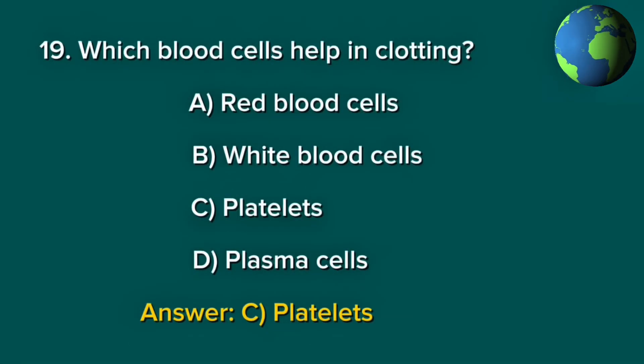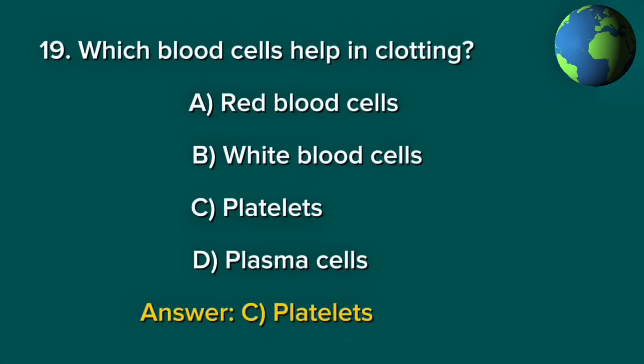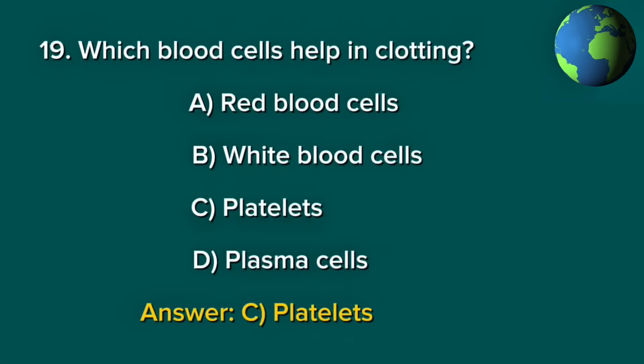Question 19. Which blood cells help in clotting? A. Red blood cells. B. White blood cells. C. Platelets. D. Plasma cells. Answer: C. Platelets.